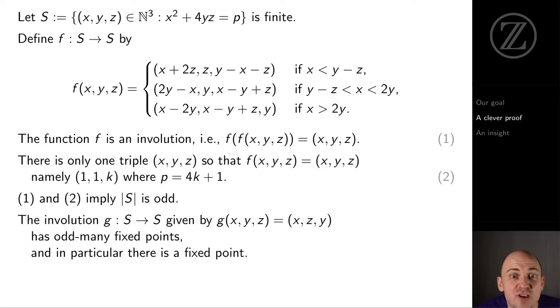Now, we apply this same trick to another involution, the function g from S to itself, which sends (x, y, z) to (x, z, y). Again, g is an involution, a function which pairs up the elements of S. But from before, we know that S has an odd number of elements. And so g cannot pair each element with a different element. There must be something paired with itself. This is a fixed point.